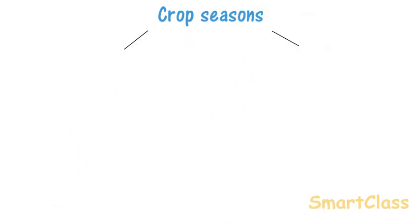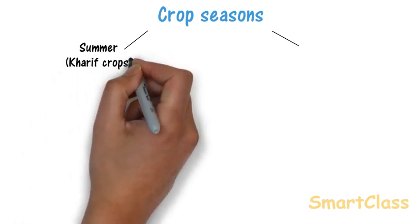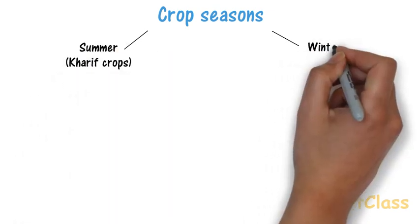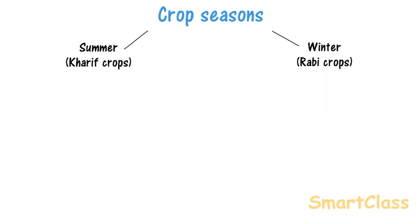Different crops grow under different conditions. In India, we have two crop seasons. Summer crops also called kharif crops and winter crops also called rabi crops. Rice, maize, jowar, peanuts are few examples of kharif crops.